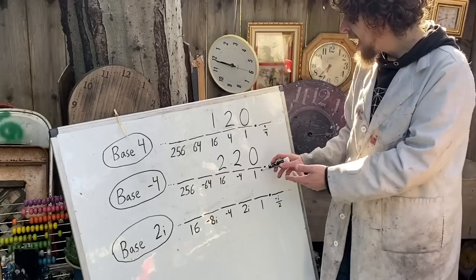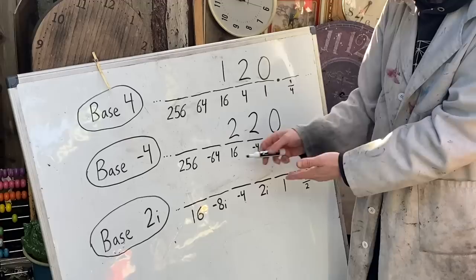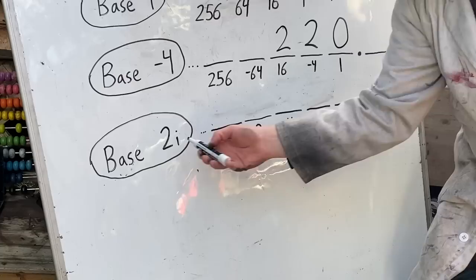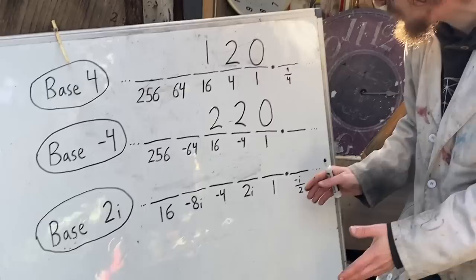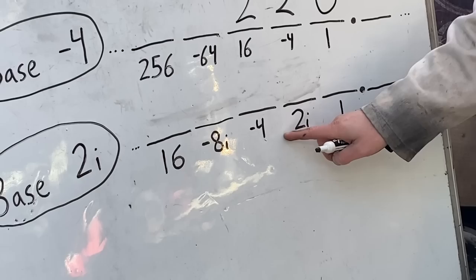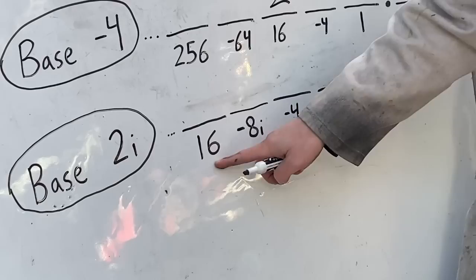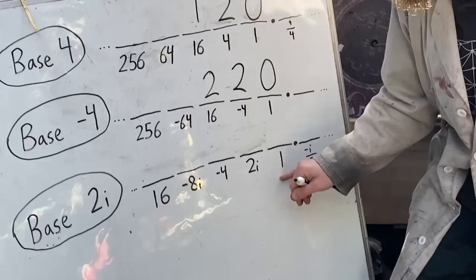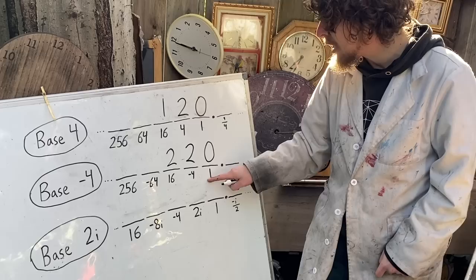Similarly to how base negative 4 had a two-term type of fluctuation between spots representing positive things and spots representing negative things, powers of 2i make base 2i's spots represent an even more fluctuating pattern with four terms in the cycle. We get a positive real, a positive imaginary, a negative real, a negative imaginary, and then the cycle continues. But amidst all of these chaotic options, we do have all the same tools base negative 4 had. Like a 1s spot, a negative 4s spot, a 16s spot, and so on.